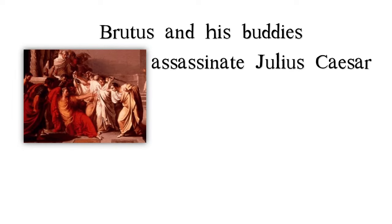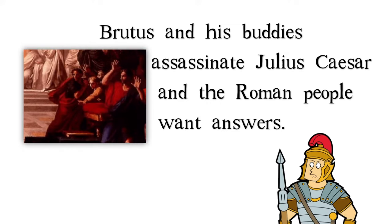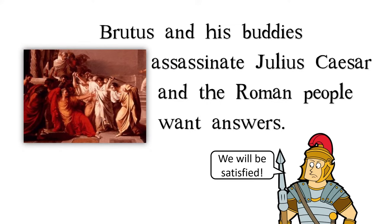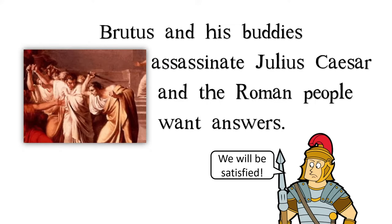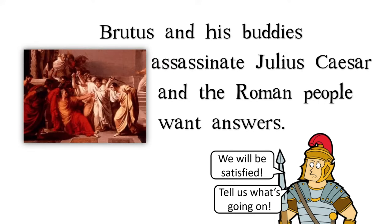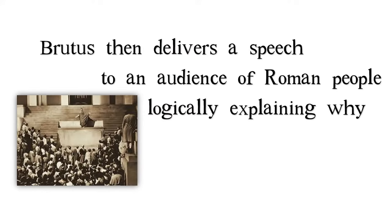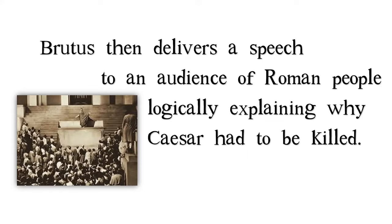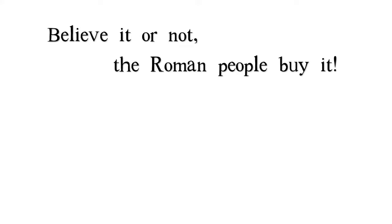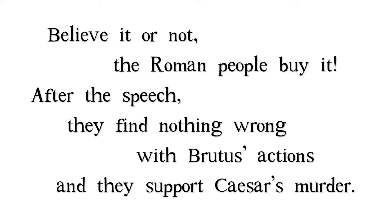Brutus and his buddies assassinate Julius Caesar, and the Roman people want answers. They say, 'We will be satisfied' — in other words, tell us what's going on. Brutus then delivers a speech to an audience of Roman people, logically explaining why Caesar had to be killed. Believe it or not, the Roman people buy it. After the speech, they find nothing wrong with Brutus' actions and they support Caesar's murder.